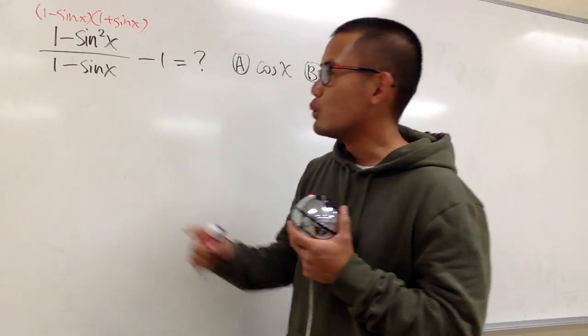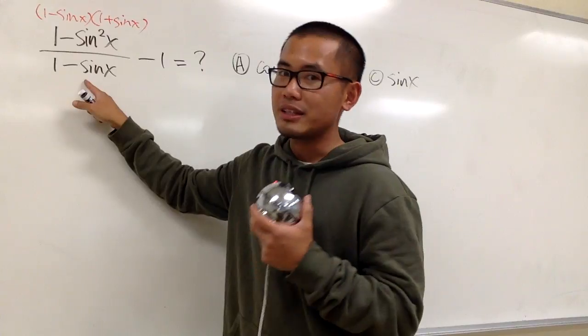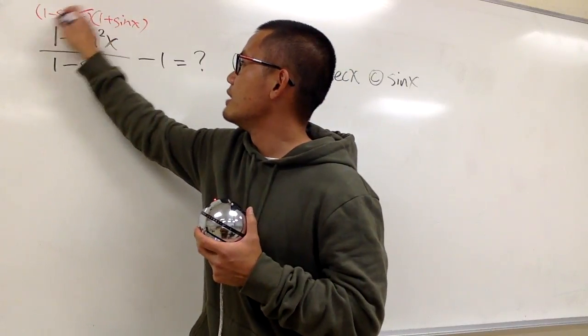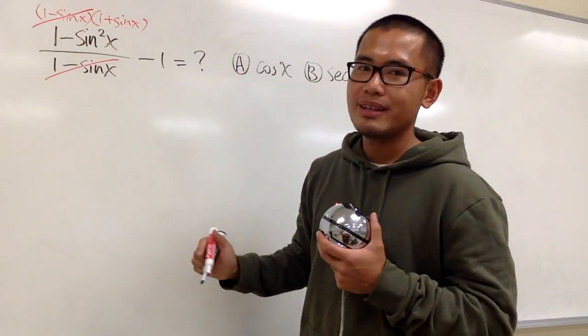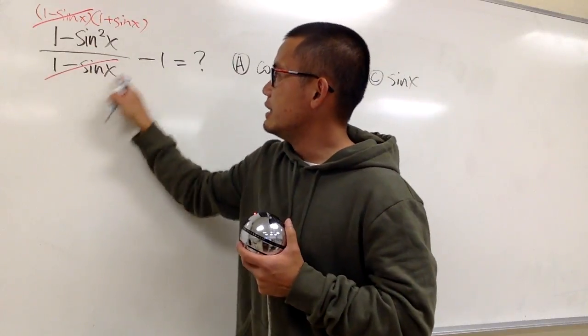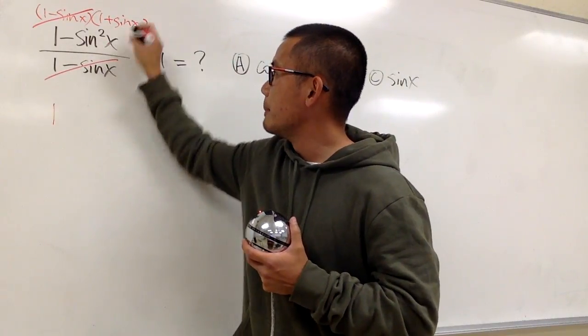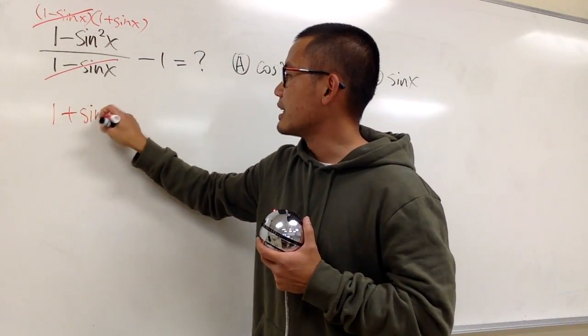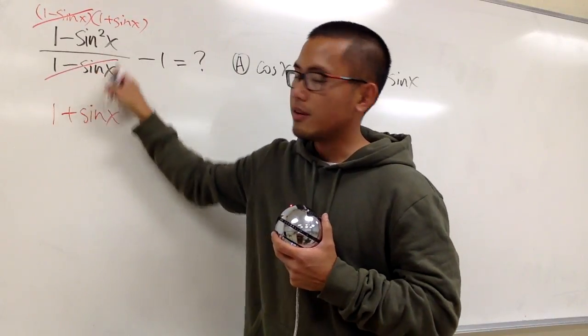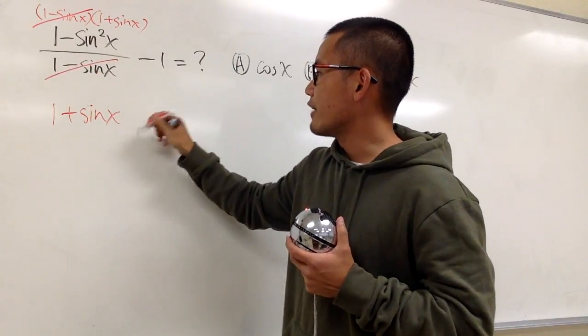And right away, we see this and that, they are the same factor, so we can cancel them out right away. So in other words, this part is just 1 plus sine x for the fraction, and then we have the minus 1.